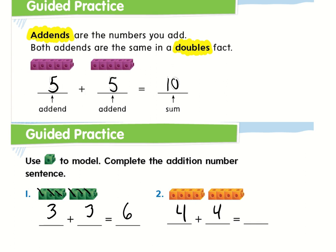So the first addend is four and the second addend is the same exact one. Let's count them up — one, two, three, four, five, six, seven, eight. So four plus four is going to equal eight. As you can see: three plus three equals six, four plus four equals eight, and five plus five equals ten up top.